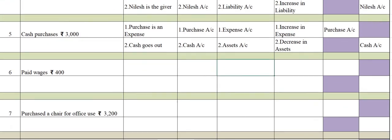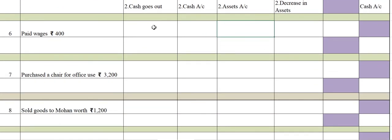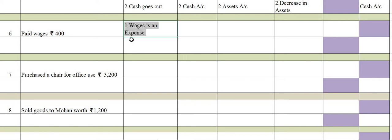Sixth transaction: Paid wages. When you pay wages, wages is an expense. And when you pay wages, cash goes out. Accounts involved: wages account and cash account.